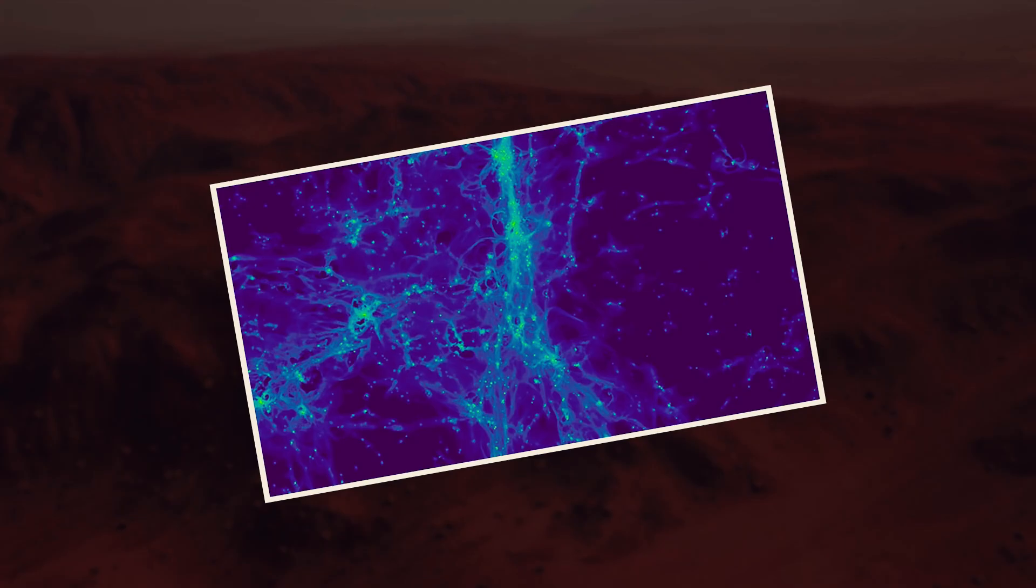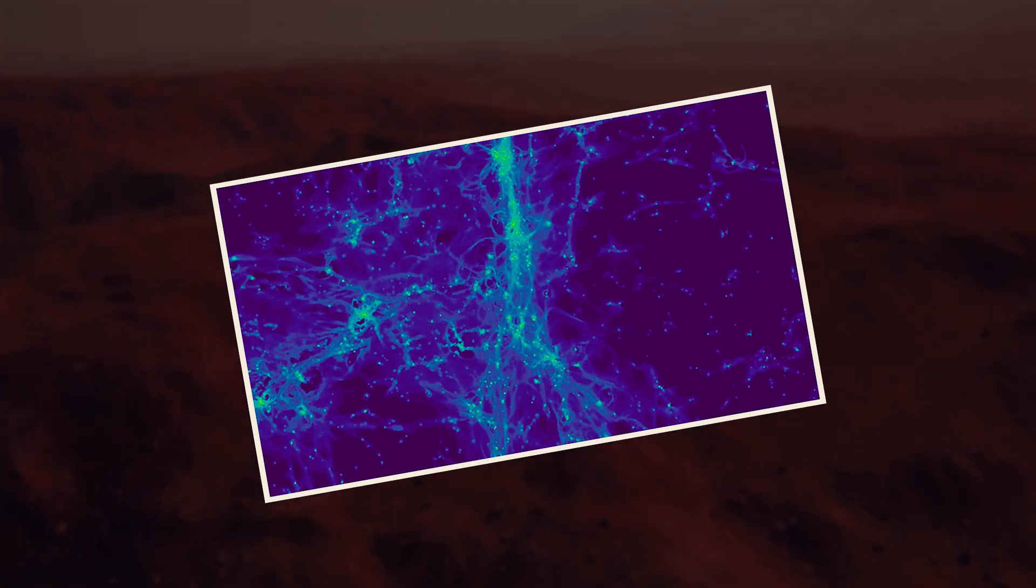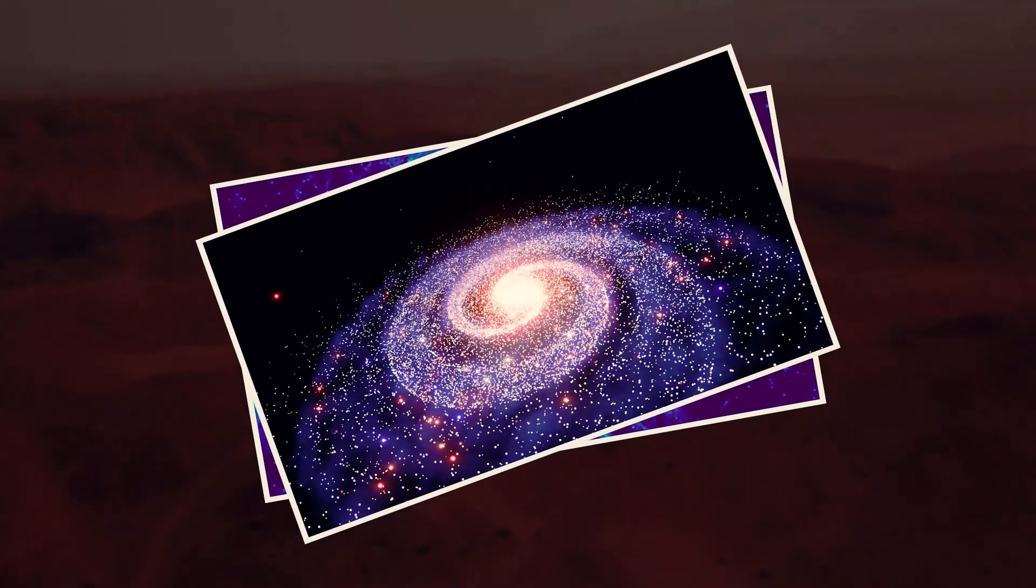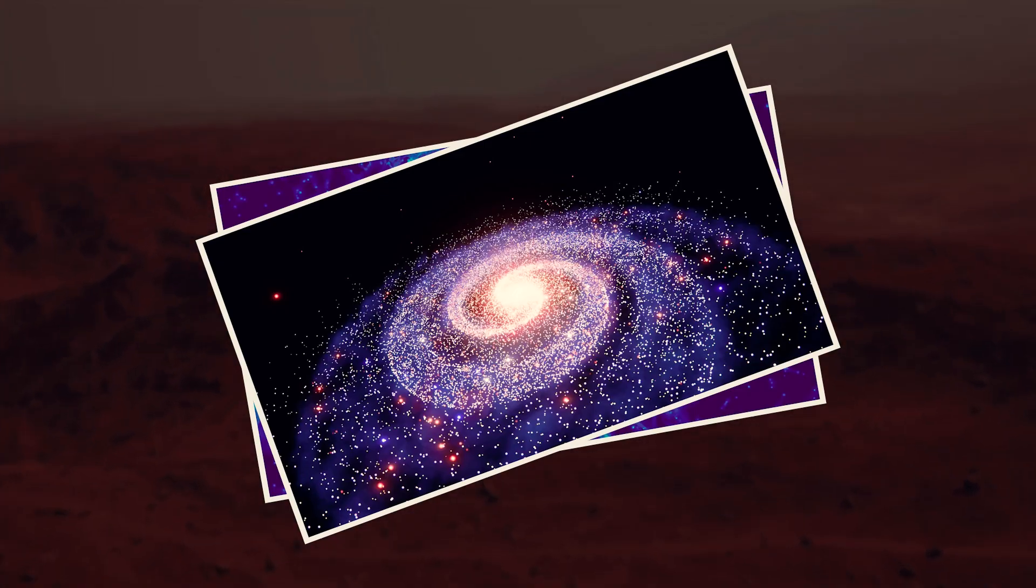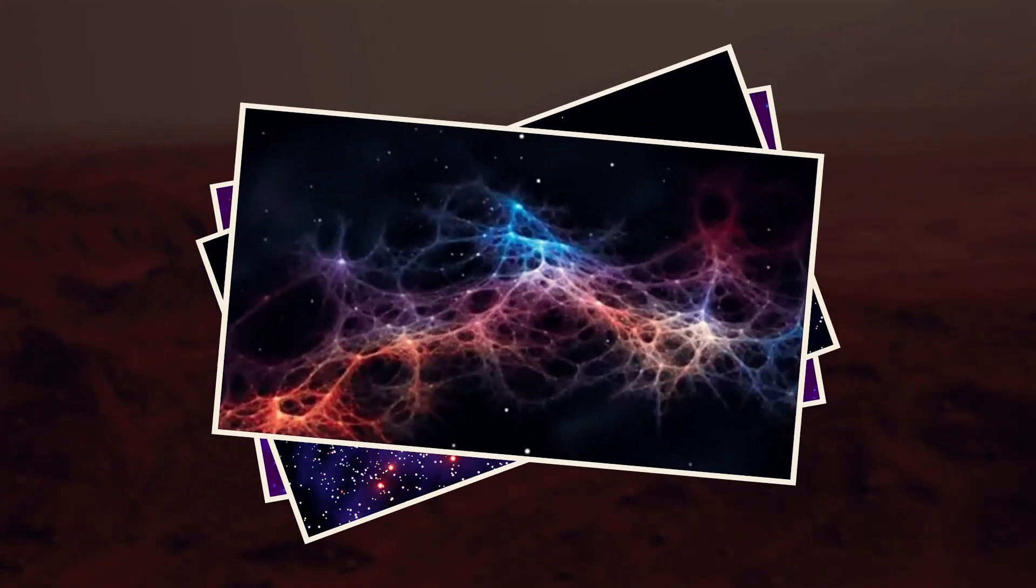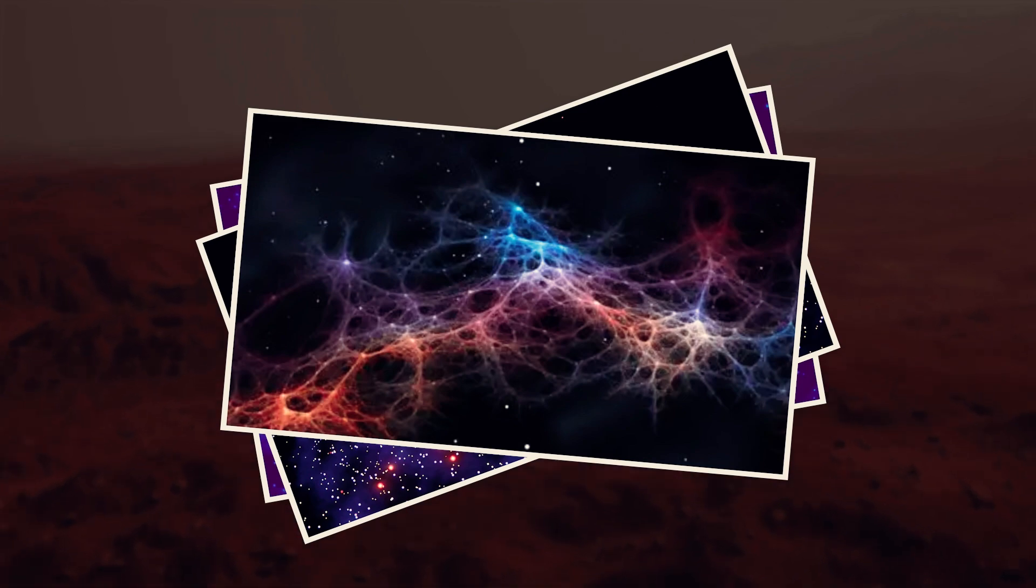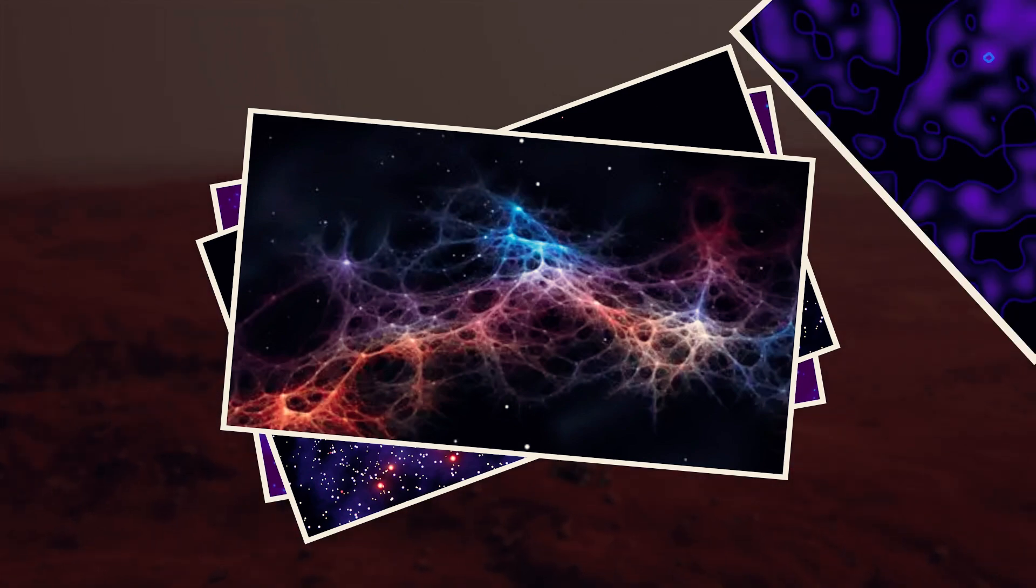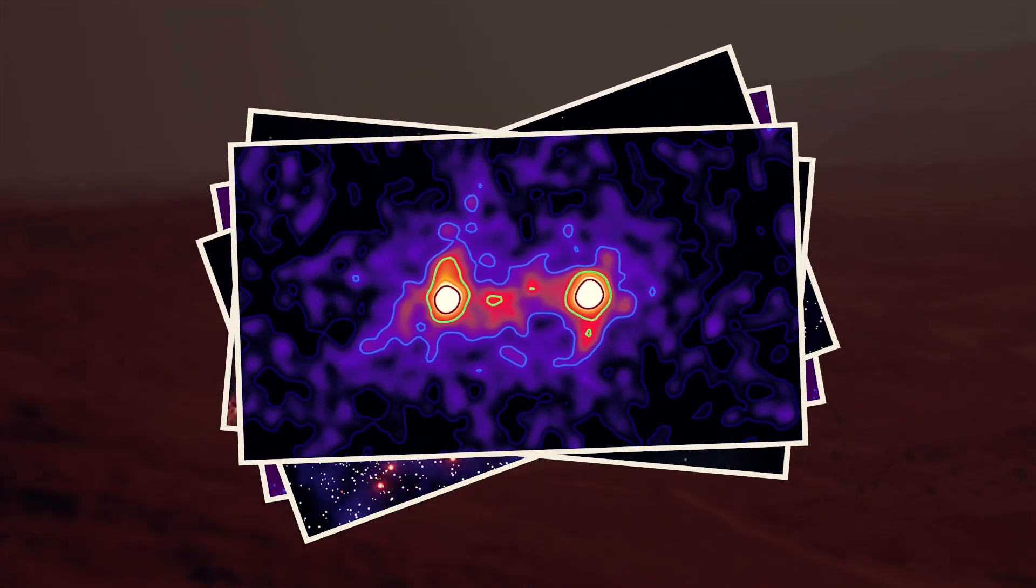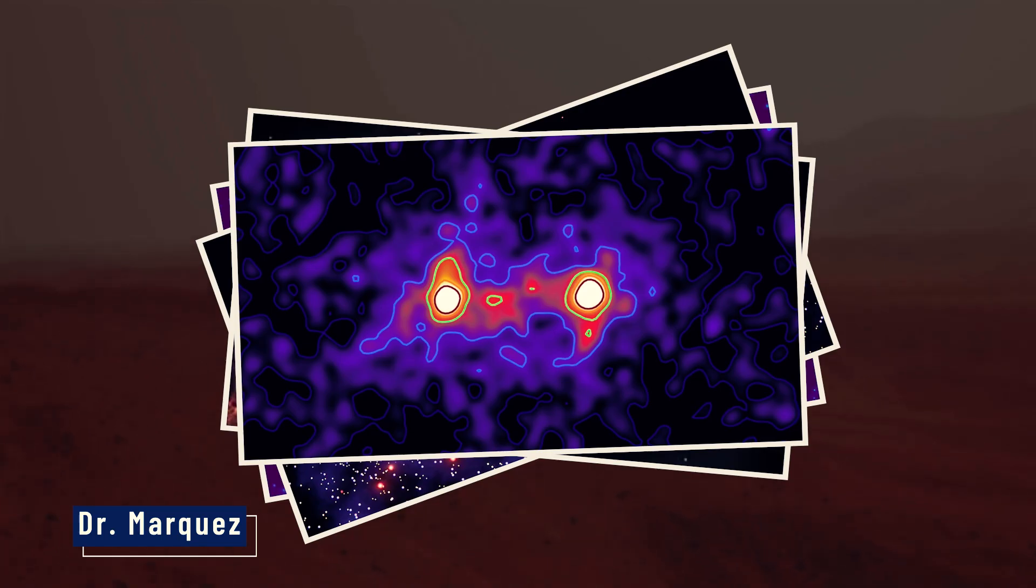The cosmic web itself is built on dark matter scaffolding, invisible except for the gas and galaxies that reveal its shape. If a dark matter filament passed through our galaxy, it could, in theory, pull visible matter into strange filamentary forms. But that's still speculation. We're seeing something that shouldn't last this long or look this precise, unless there's an invisible hand guiding it, explained Dr. Marquez, a theoretical physicist.